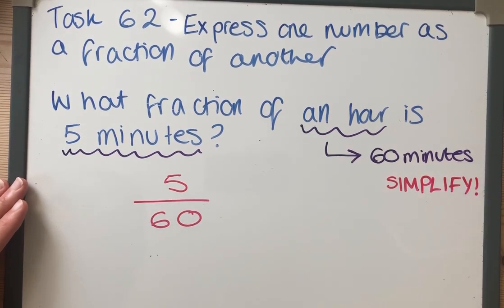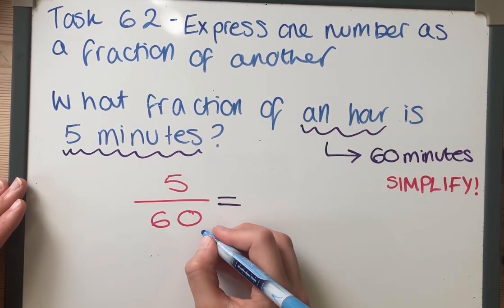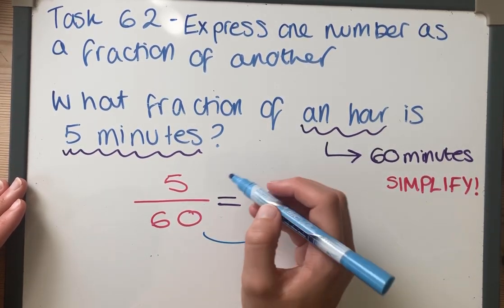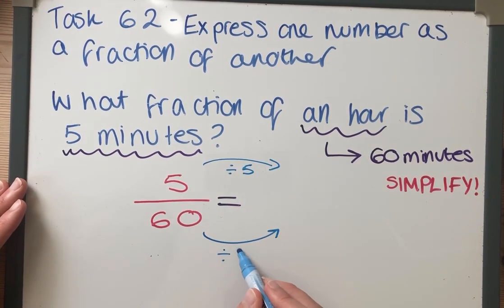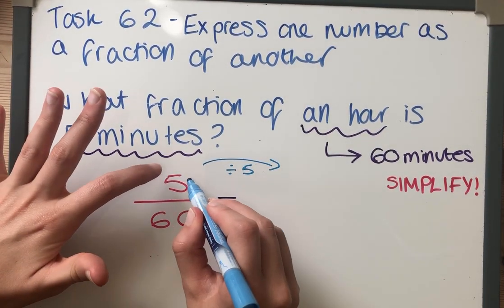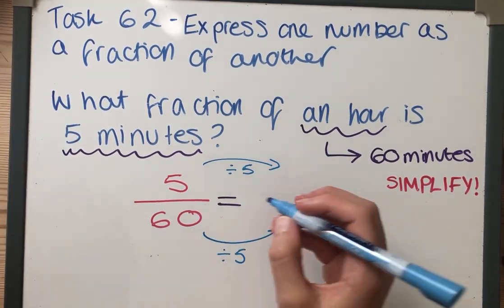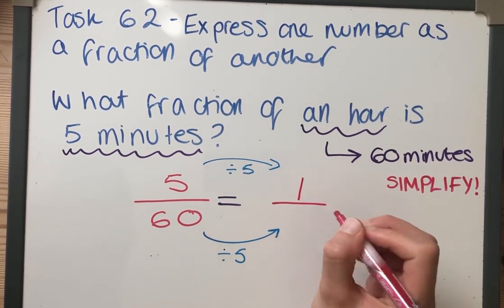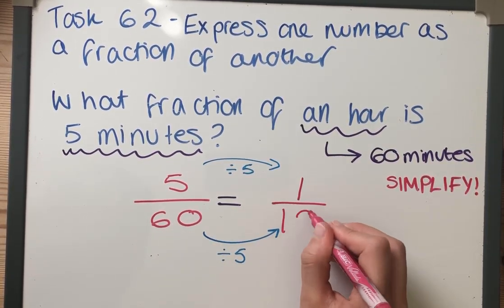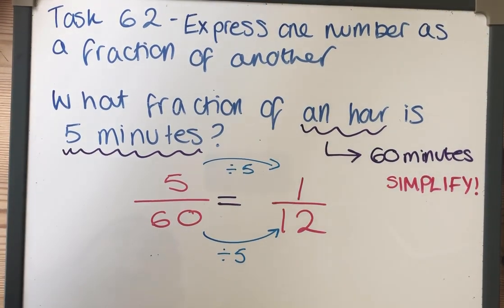And again, the key thing we've got to do is simplify. So I've got to think what times table are both of those in, and I think they are both in the 5 times table. So I'm going to divide the top and the bottom of my fraction by 5, because what I do to the numerator, the top number, I must do to the denominator, the bottom number. 5 divided by 5 is 1, and 60 divided by 5 is 12. So the answer is one-twelfth.